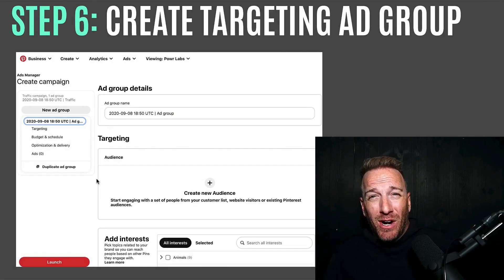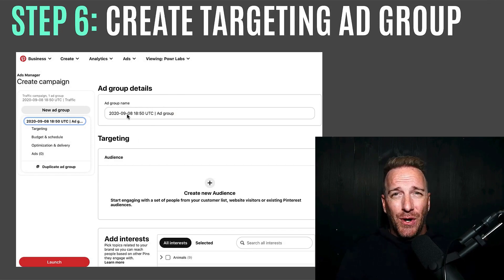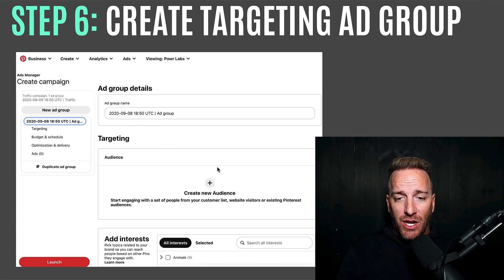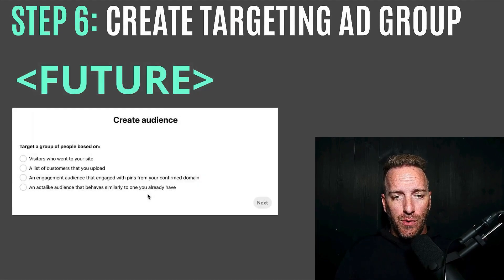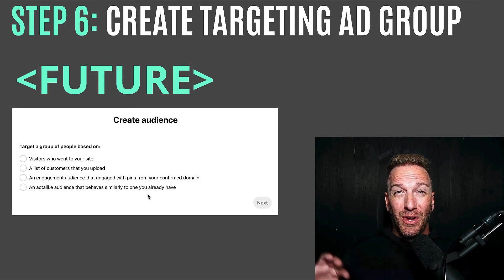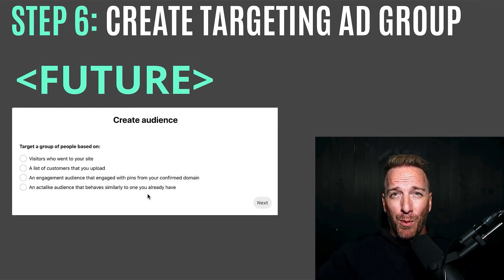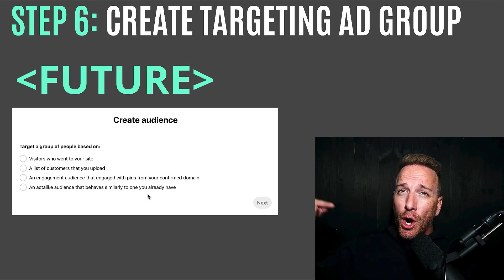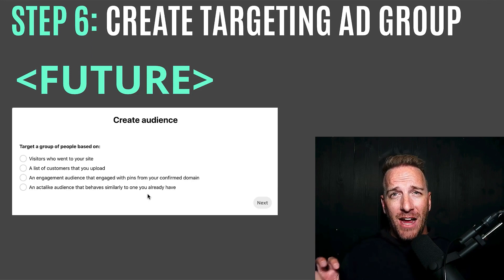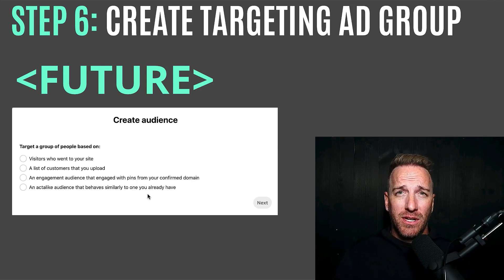After you've created the campaign, create the ad group. The first thing you can do is create a new audience or go to the interest section. You're not going to do the audience section when you first create a Pinterest ad, but later on: if you've got people that have visited your boards or pins over the last couple months or six months, you can target those people with ads in the future. So if you've got a Pinterest account that's been around for a while, you can retarget those customers. But we're not going to do that for this purpose.